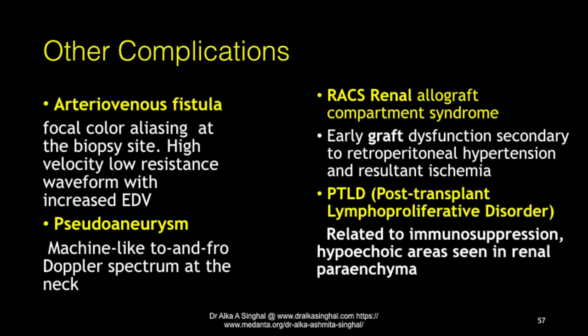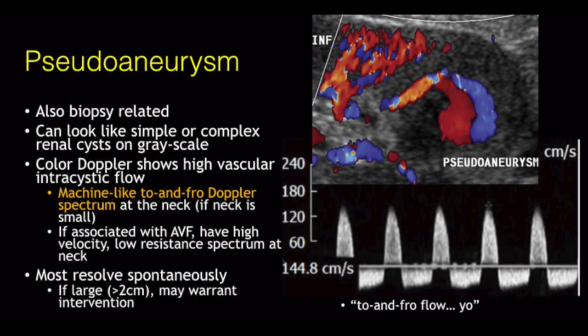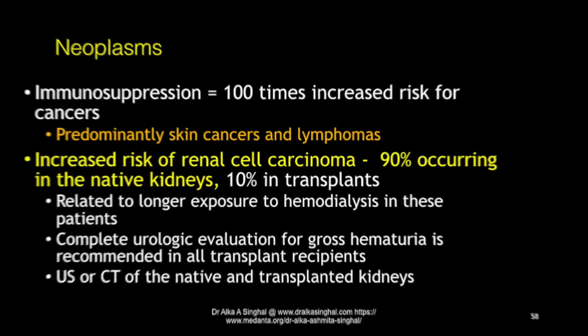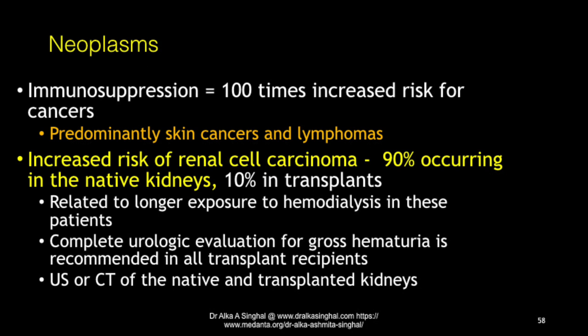Other rarer complications include AV fistula and pseudoaneurysms, often post-biopsy, showing typical aliasing and vascular flow patterns. Renal allograft compartment syndrome (RACS) is rare but requires surgical intervention to rescue the kidney. Post-transplant lymphoproliferative disorder (PTLD) due to immunosuppression is less often seen these days. Neoplasm is a very important topic: with immunosuppression there is a 100-fold increased risk for malignancies, commonly skin cancers and melanomas. For the kidneys specifically, there is a 10-fold increased risk of renal cell carcinoma, more so in the native kidneys. Therefore, evaluation of the native kidneys is also part of the renal transplant Doppler evaluation — evaluate them thoroughly.